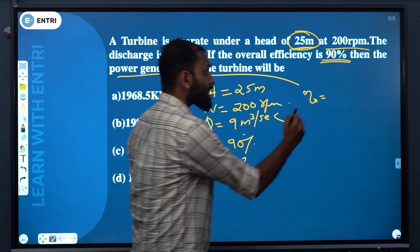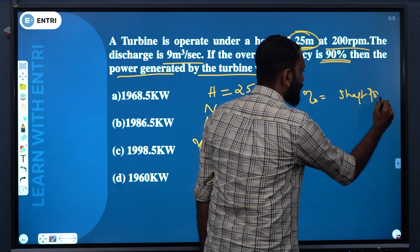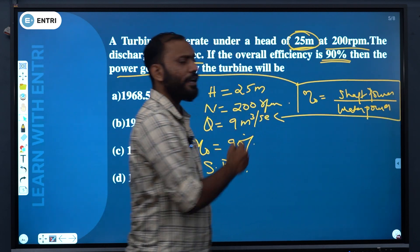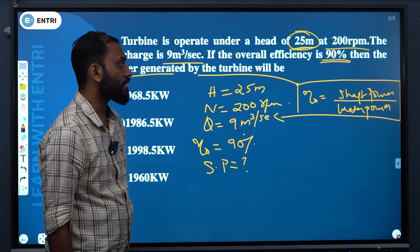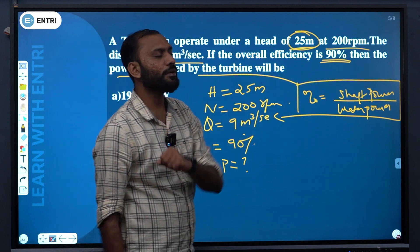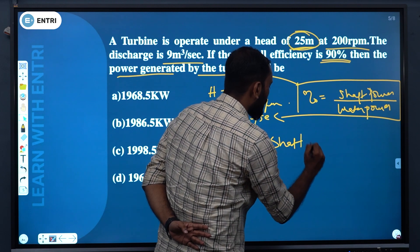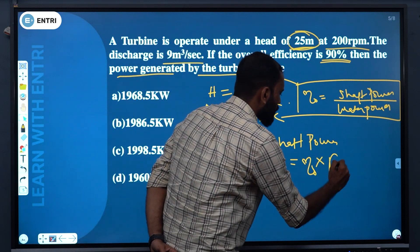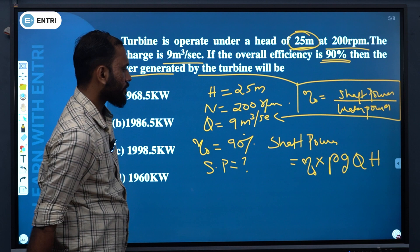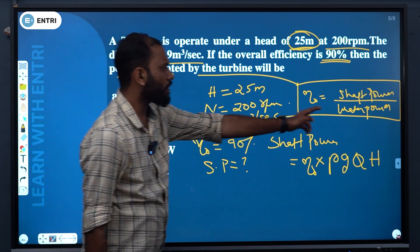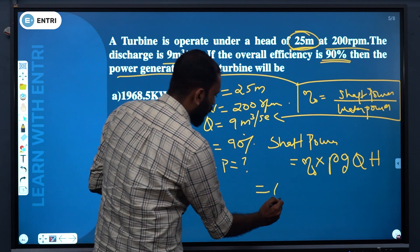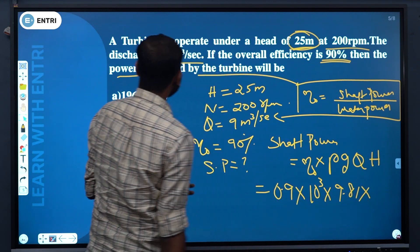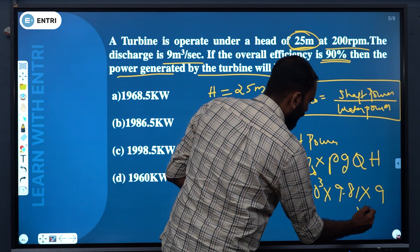Overall efficiency is defined as the ratio of shaft power to water power. Shaft power is given by the equation: overall efficiency into water power, which equals rho × g × Q × H. So, shaft power equals 0.9 × 10³ × 9.81 × 9 × 25.